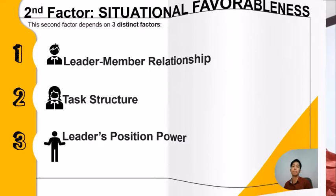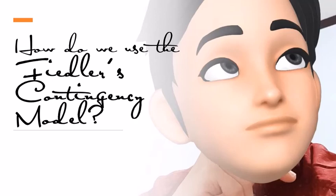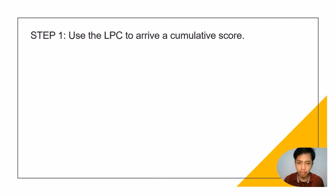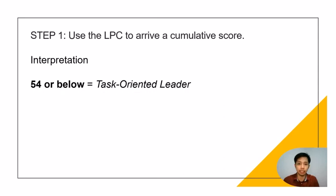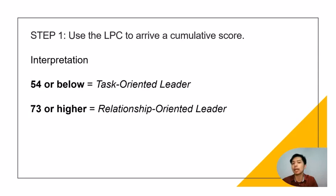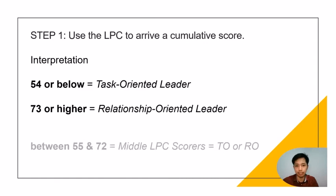Let me teach you how to use this approach. Step 1: Identify your leadership style using the LPC scale to generate a cumulative score. If your score is 54 or below, you are considered a task-oriented leader — still effective regardless of whether the situational factors are favorable or not. If you score 73 or higher, you are a relationship-oriented, people-focused leader. If your score falls between 55 and 72, you are considered a middle LPC scorer, meaning you could have task-oriented or relationship-oriented tendencies — it's mixed.